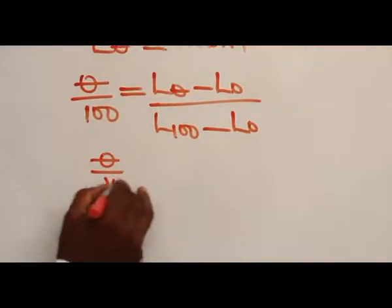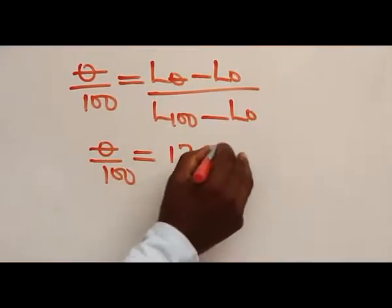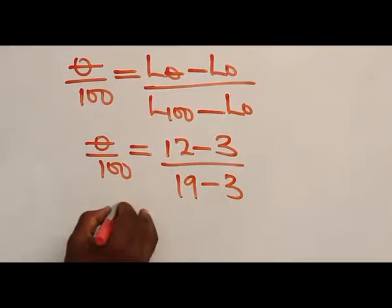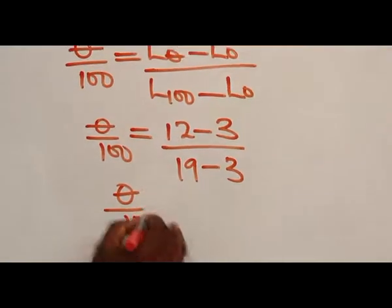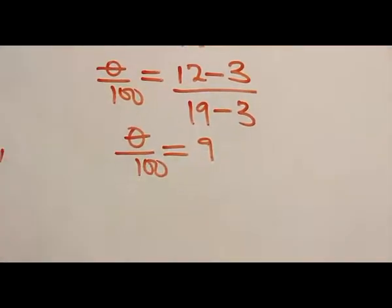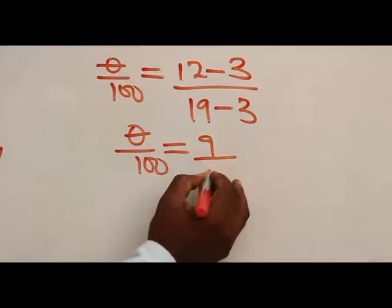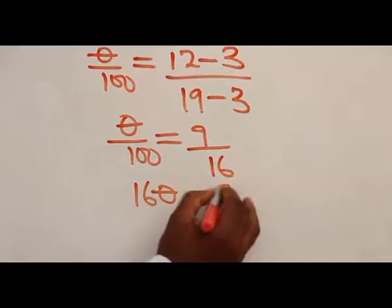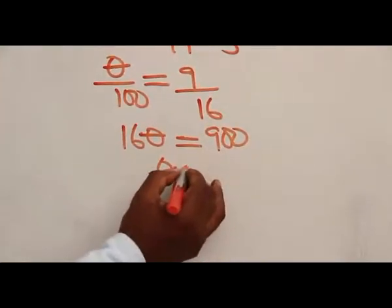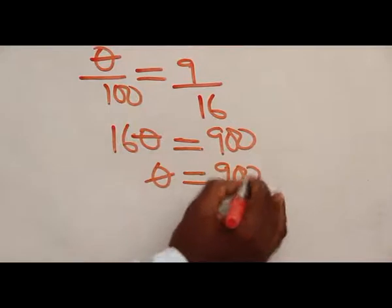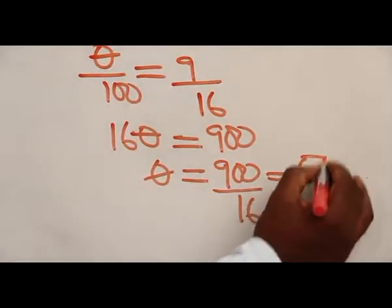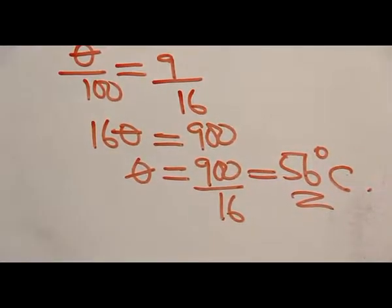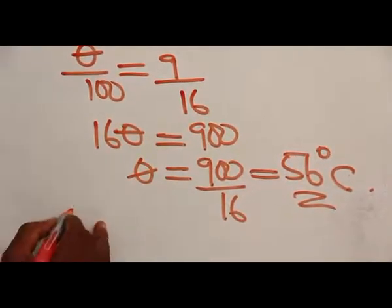Substituting: θ/100 = (12 − 3) / (19 − 3) = 9/16. Therefore 16θ = 900, giving θ = 900/16 ≈ 56°C. By this solution, option C is correct.